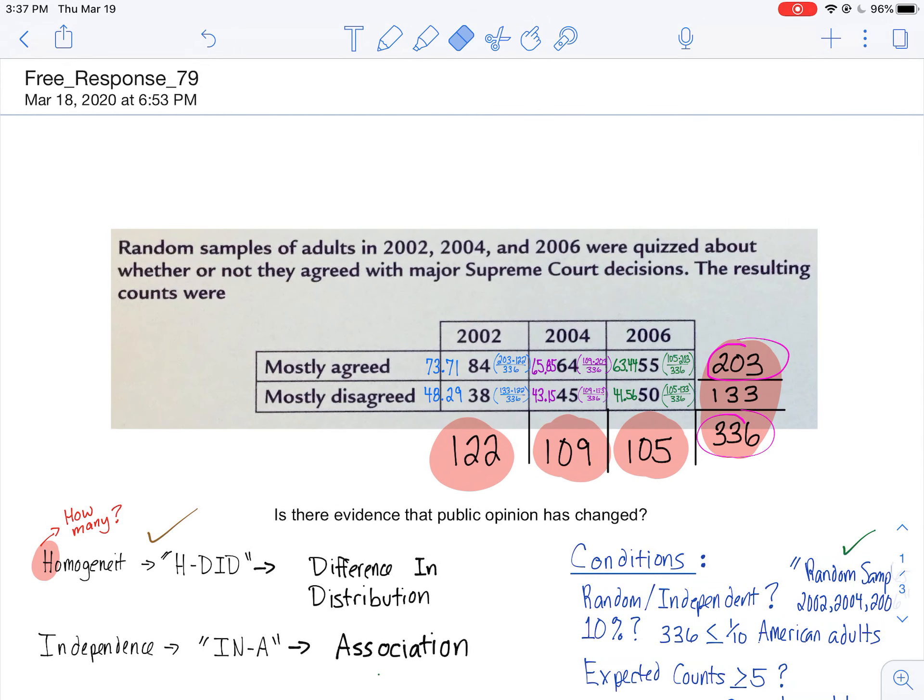I'm going to walk you through Free Response 79 from the Baron card 2nd edition. It's a chi-square problem and we've just started working on chi-square, so here's some really good practice for you guys.